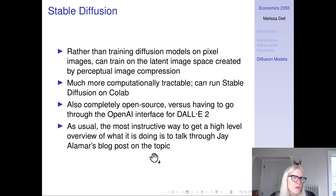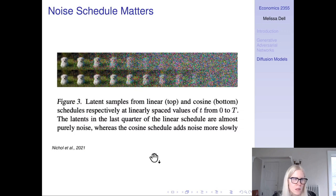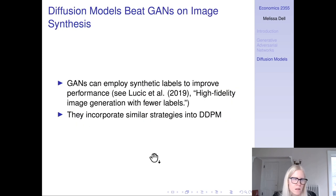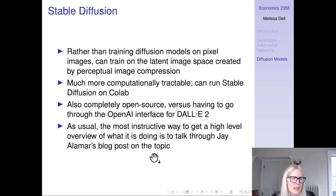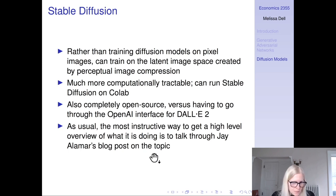A really important insight of stable diffusion is that rather than training the diffusion models on pixel images — where you're noising the pixels and then reconstructing them or predicting the noise at the pixel level — instead you can train on the latent image space created by something called perceptual image compression. This is important because it's way more tractable, since you have this compressed latent space that you're training on. You can actually run stable diffusion on Colab, which made diffusion models way more accessible.